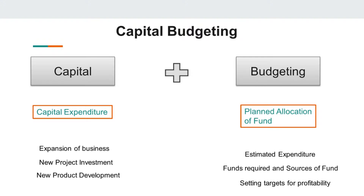Let's understand this in a more simplified manner. When we are talking about capital budgeting, it is a long-term investment decision. Let's simplify this word into two parts: what is capital representing and what is budgeting representing? Try to relate capital with capital expenditure, because capital expenditure represents those expenditures which are large in nature — involving a huge amount of cost — and the benefit of which would be reaped over a longer period of time.